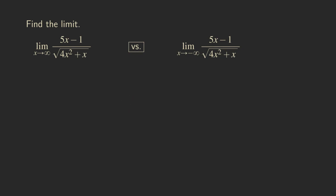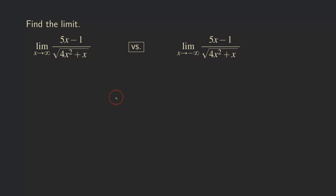Hello everyone, this is Wilson here. Let's look at these two limit problems. For one of the limit problems, we have x approaching infinity, and the other one x is approaching negative infinity. The functions are actually the same, so these two problems look so similar, but they're actually different. I put them side by side because we want to compare how small details can actually change the final answer.